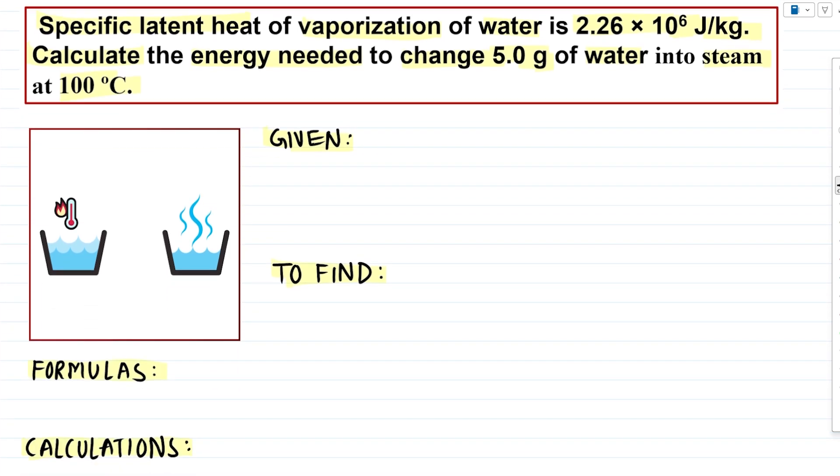So we have a mass of water, 5 grams of water and it is in a liquid state. So this is our liquid state water and then our task is to convert this water into steam, which is in a gaseous state of water. Now this conversion is not free.